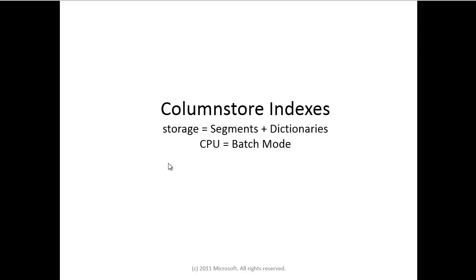To begin with, as I indicated in my previous presentations, column store indexing represents one of the three major legs of a properly built data warehouse system. The first leg is the data model — star schema. The second is a balanced system, which I've gone through in some detail: hardware throughput, megabytes per second, and those kinds of things. This represents the third leg of a properly constructed data warehouse system: the column store indexes.